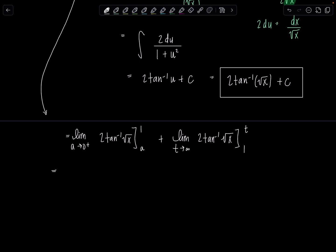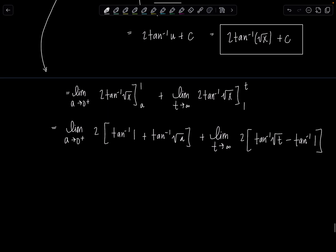So then we have now the limit as a approaches zero from the right to tan inverse of rad x evaluated from a to one, plus limit as T approaches infinity to tan inverse of rad x from one to T. Those are my limits over here. One to T.